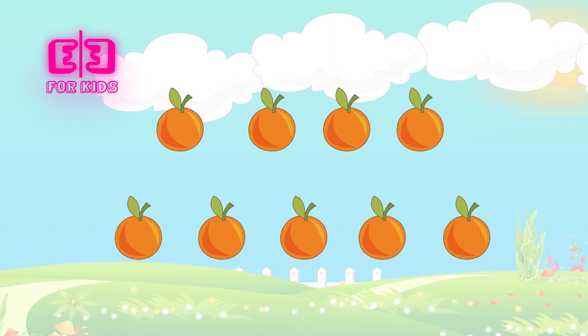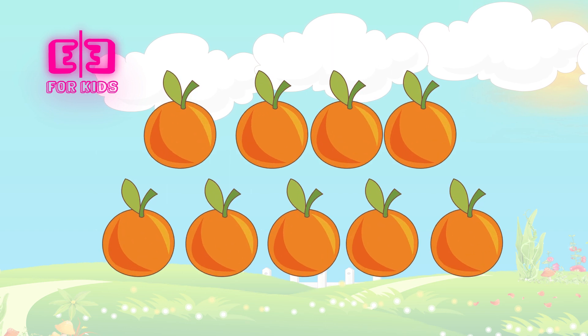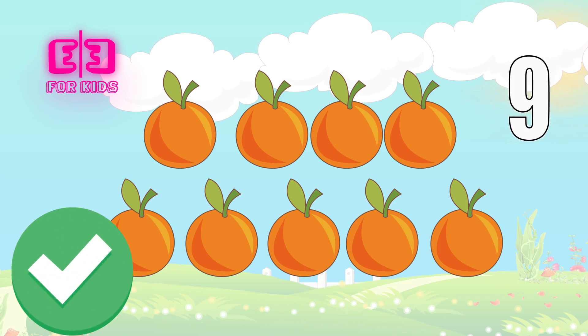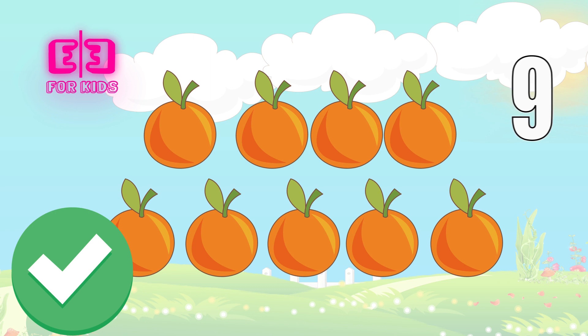How many oranges are there on the screen? Three, two, one. Correct, kids. There are nine oranges on the screen.